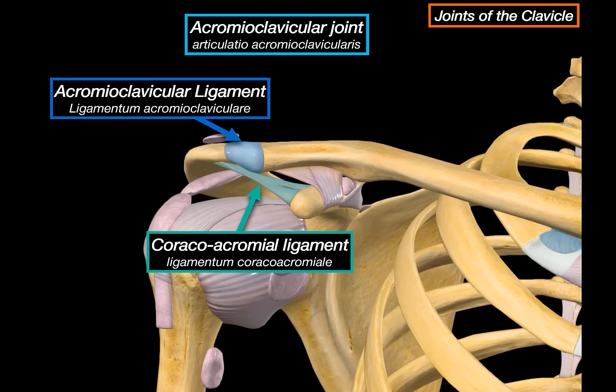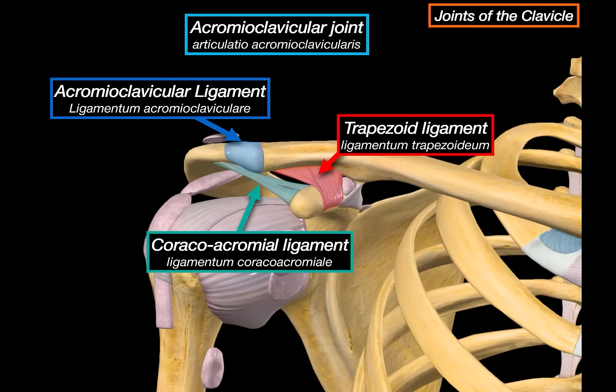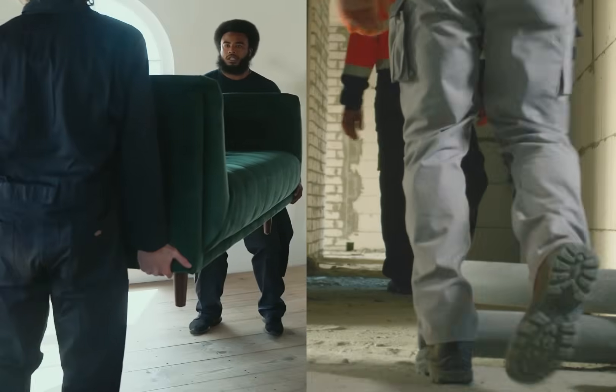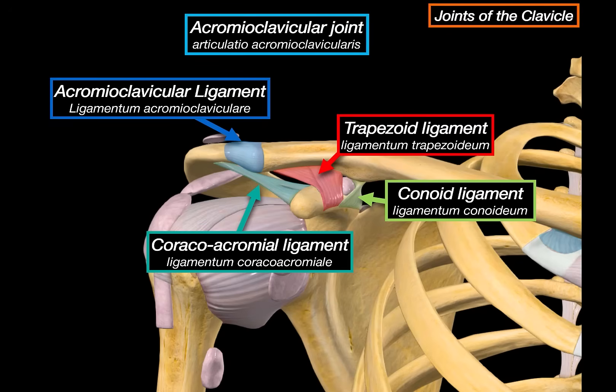Looking below the clavicle, we find two ligaments that suspend it from the coracoid process. Together they form the coracoclavicular ligament, but they have two distinct parts. The trapezoid ligament is more lateral, running almost horizontally. The conoid ligament is more medial and runs vertically. These two work together to prevent the clavicle from displacing upwards, keeping the shoulders stable, especially when you lift heavy things or brace during a fall. Overall, these structures form the support system for the lateral end of the clavicle, anchoring it to the scapula and keeping the shoulders suspended in space.